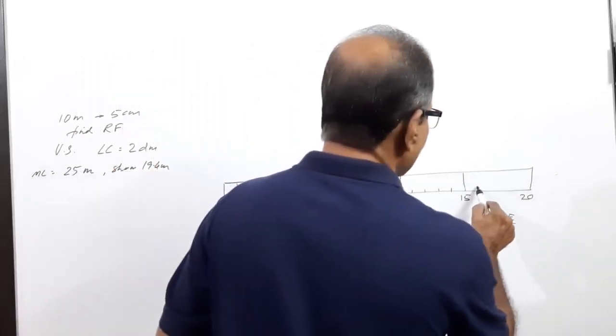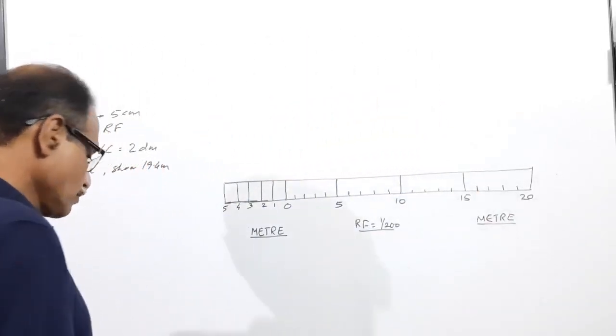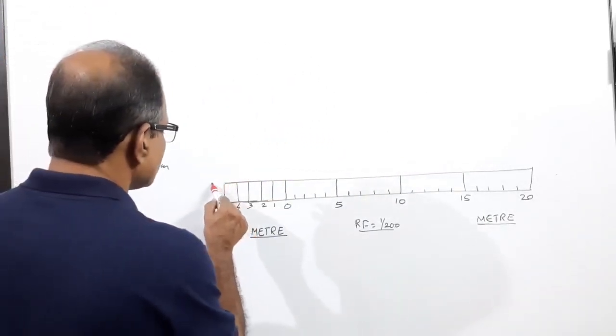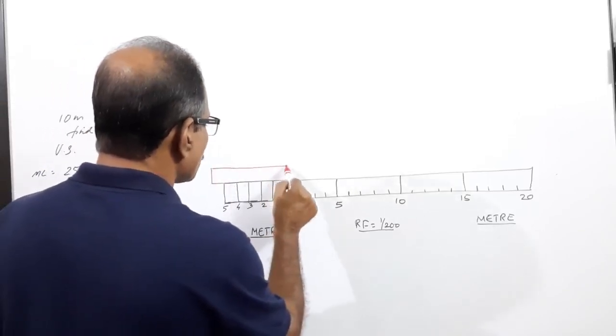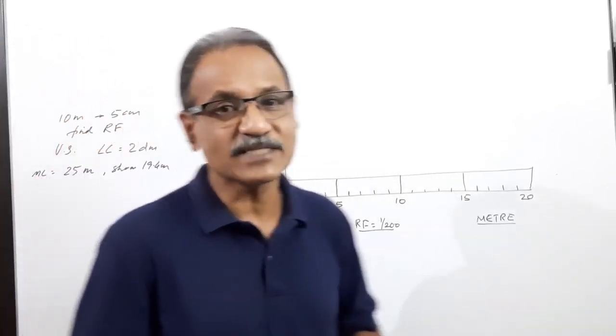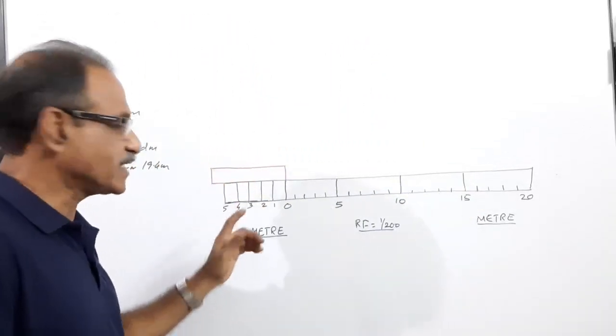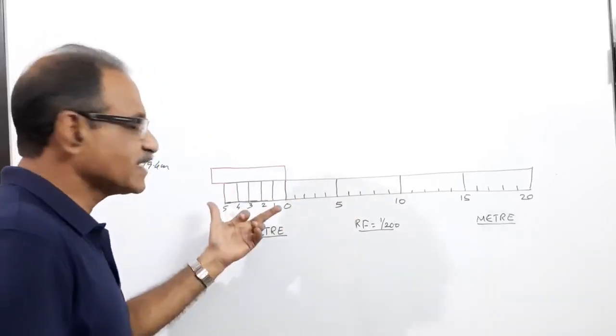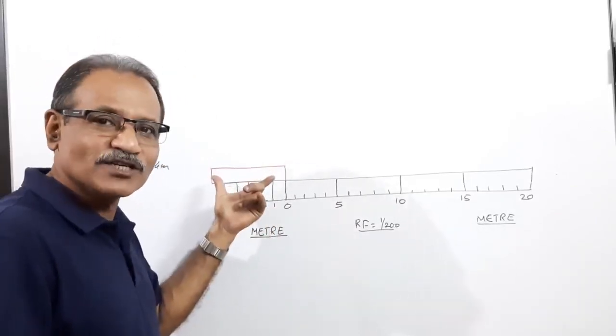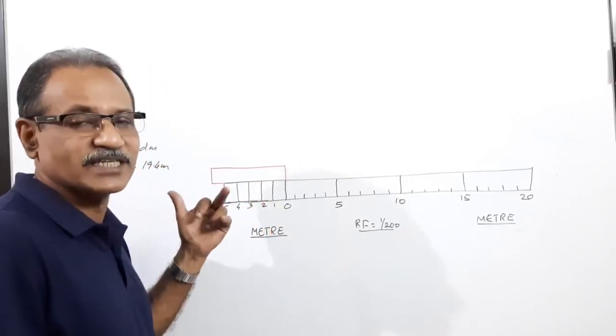Now take the distance of six divisions and construct the vernier on top of this. When you take six divisions, it represents six meters. Take six divisions—that's five divisions plus one more. Take the distance corresponding to six divisions and divide it into five equal parts.